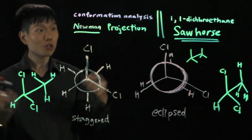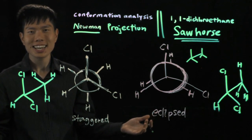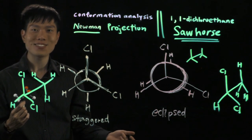So I hope by now you know how to translate Newman projection to Sawhorse representation, and vice versa. Thank you.